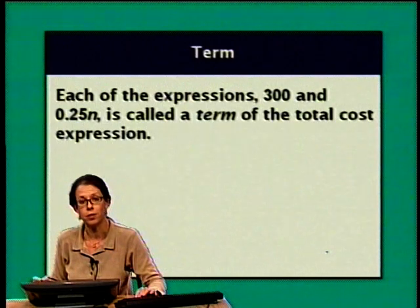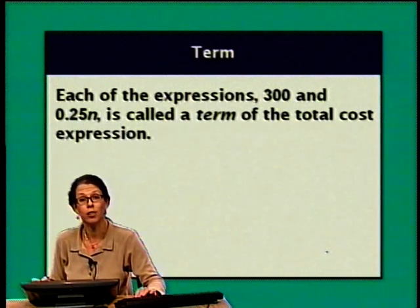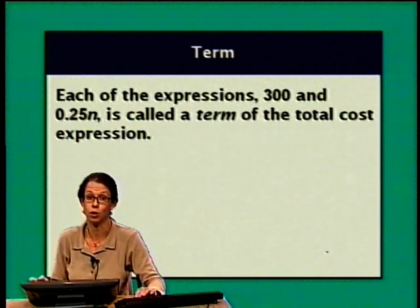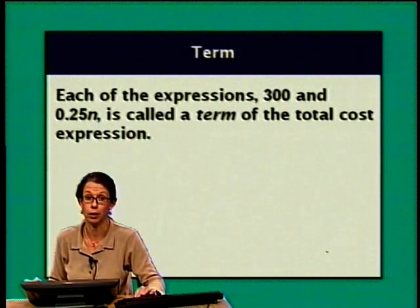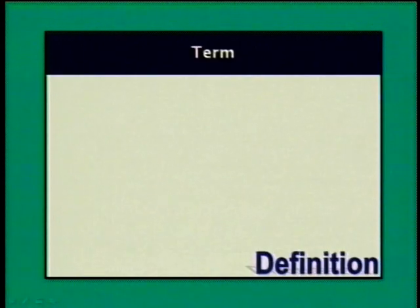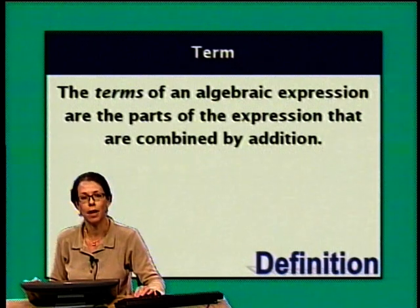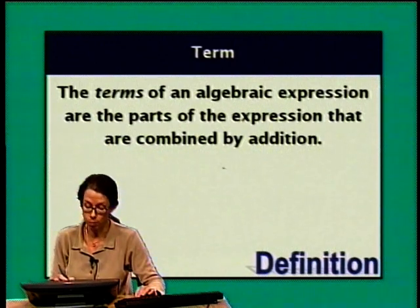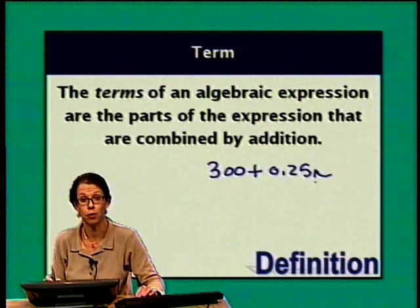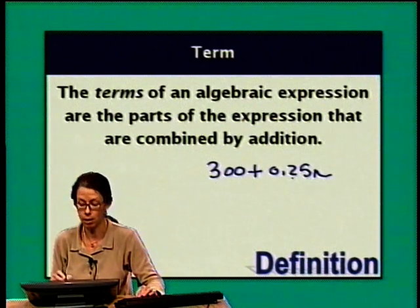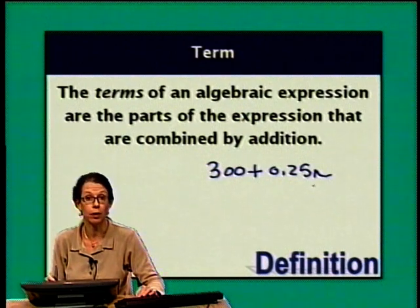Each of the expressions 300 and 0.25n is called a term of the total cost expression. The terms of an algebraic expression are the parts of the expression that are combined by addition. So we had two parts: 300 plus 0.25n. This algebraic expression has two terms — 300 and 0.25n. Typically we read math from left to right, so the first term is 300 and the second term is 0.25n.